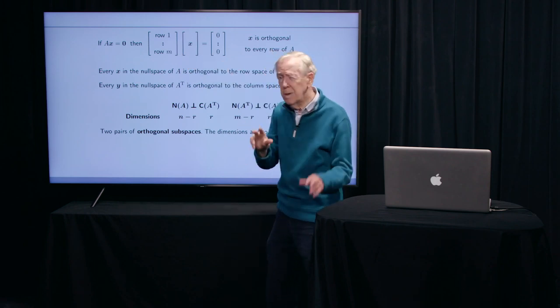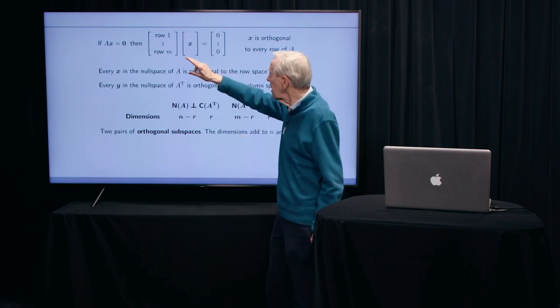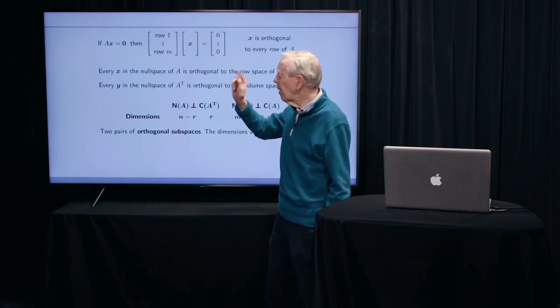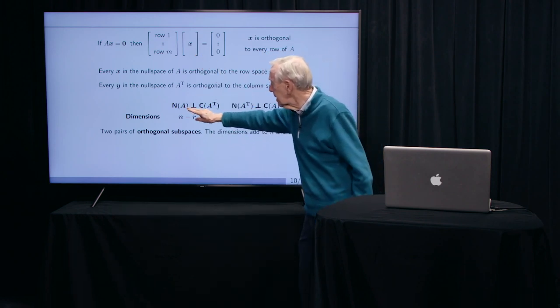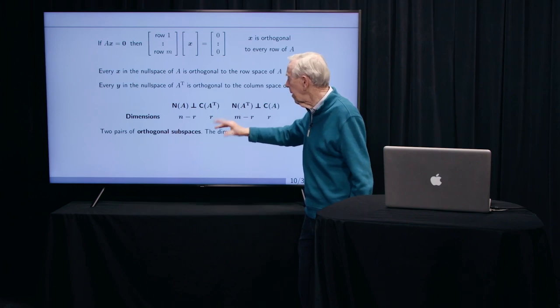We've said that from this equation, that tells you the geometry that the row vectors are perpendicular to the x vector, the thing in the null space. So x is there, the rows are there, and they're perpendicular.